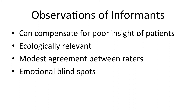Informants can compensate for poor patient insight. If a patient lacks self-awareness, informants — usually family members — can say that's not actually the case. Their observations are also ecologically relevant: they know the person, their environment, what they need, and what they can do. Their input is usually very valuable. However, there's typically only modest agreement between different raters. A patient might have two children accompanying them who give very different descriptions. People also have emotional blind spots — family members sometimes report the patient functioning more intact and fluently than what seems objectively true, because they want their loved one to be okay.